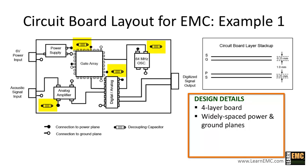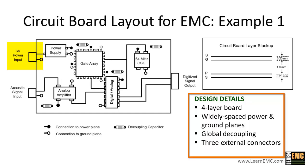There are four decoupling capacitors connected between the power and ground planes. This is considered global decoupling since these capacitors are not located close enough to the active devices to be considered local. Notice that the board has three external connectors: a six-volt power input, an acoustic signal input, and a digitized signal output. This is a mixed signal board since it has both analog and digital circuits.